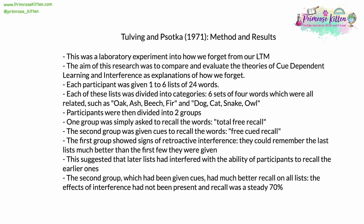In 1971, Tulving and Bosotka carried out research to establish how we forget from long-term memories, examining both cue-dependent learning and interference as explanations, and looking at where these two theories agreed and disagreed — they may not have been mutually exclusive. Each participant was given a list of 24 words: either one, two, or up to six lists. Each list was divided into six categories of four related words, such as oak, ash, beech, fir — all trees — or dog, cat, snake, owl — all animals.